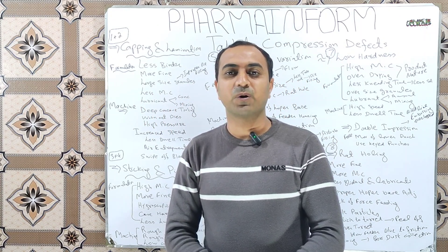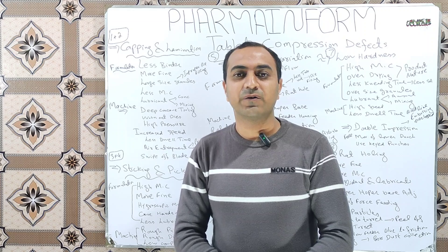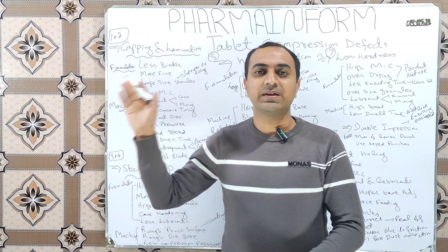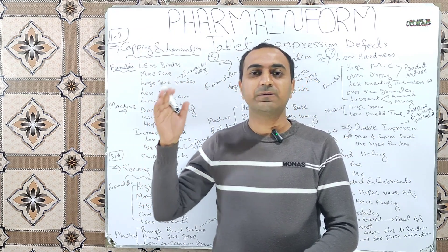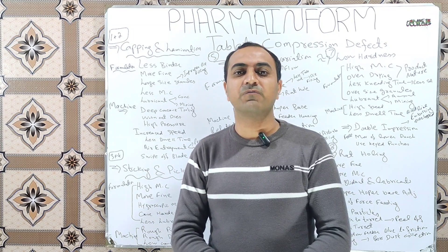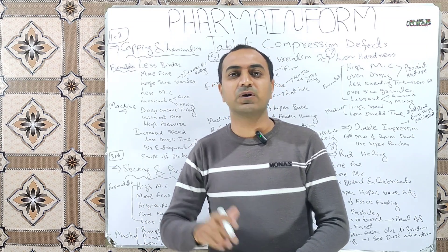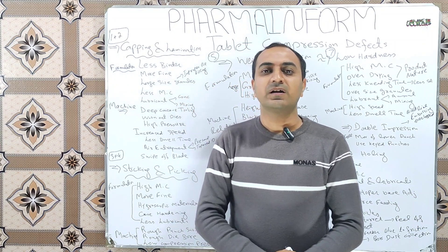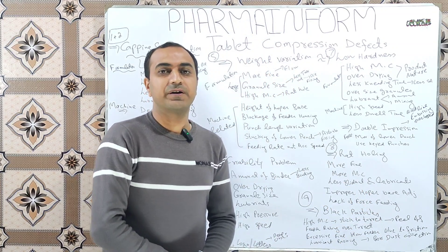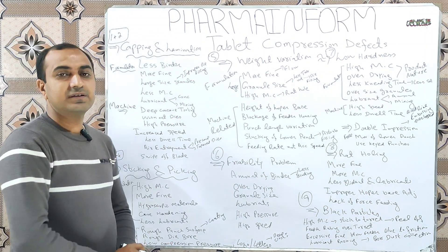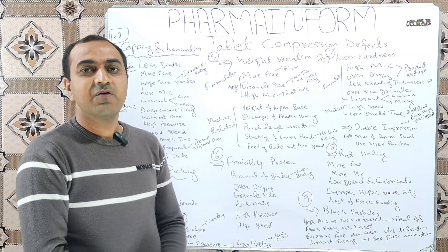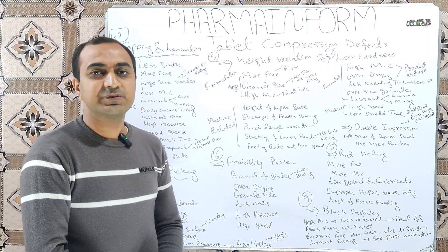The most common problems observed during tablet compression are: capping, lamination, sticking, picking, weight variation, hardness problem, friability problem, rat holing, double impression, and black particles.